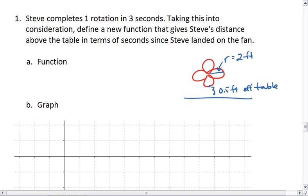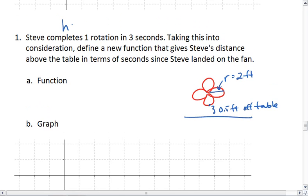Which, remember, gave us the function up above of h = m(θ) = 2sin(θ) + 2.5.